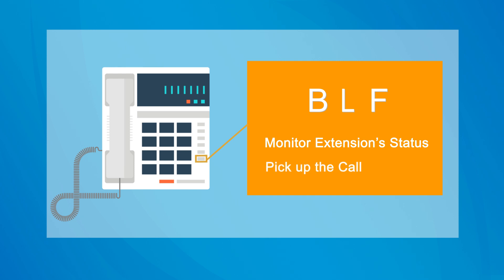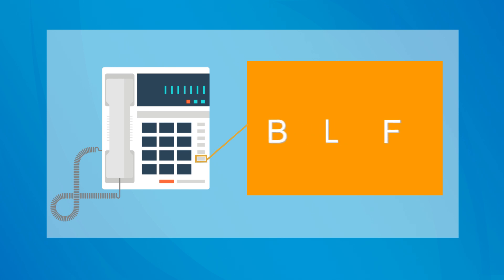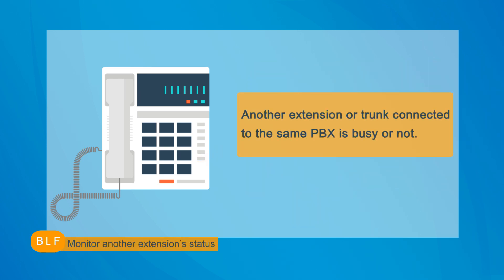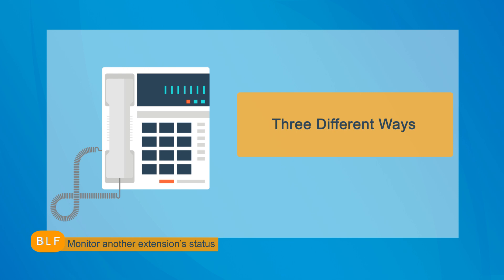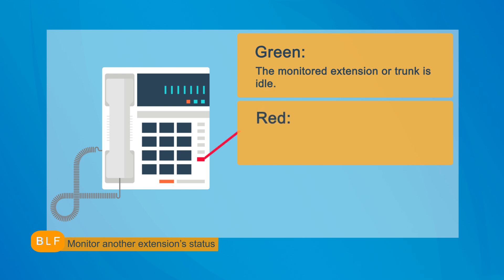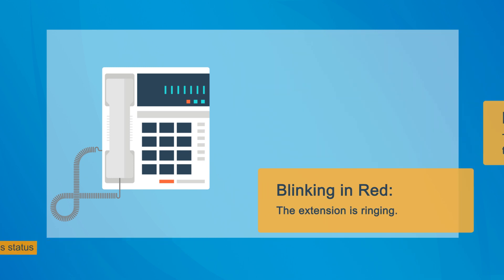Actually, the feature we're going to set is to monitor extension status and pick up a call to that extension right on an IP phone. At the very beginning, let's spare some time to figure out the BLF feature. Busy Lamp Field is a light on an IP phone that tells you whether another extension or trunk connected to the same PBX is busy or not. The light will usually display in three different ways. If it's static green, it means the monitored extension or trunk is idle. If it's static red, it means the extension is on a call or trunk is in use, whether the call is connected. If it's blinking in red, it means the extension is ringing. The actual status displayed might vary depending on the type of your IP phone.